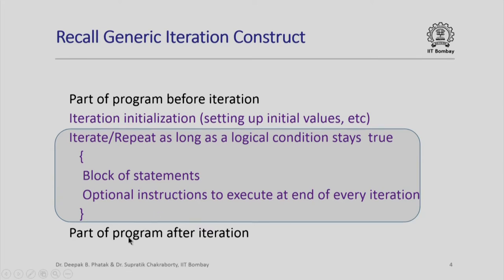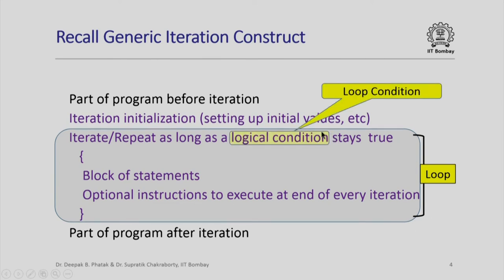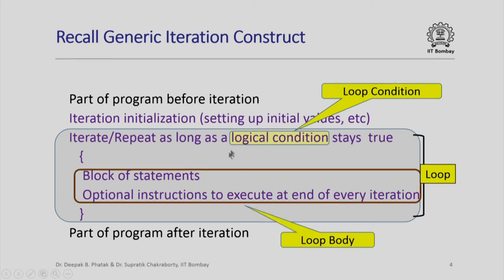After that, the part of the program that must be executed at the end of this iteration appears. This part of the code is usually called a loop. The logical condition is also called a loop condition, and the block of statements along with instructions to execute at the end of every iteration is often called the loop body.